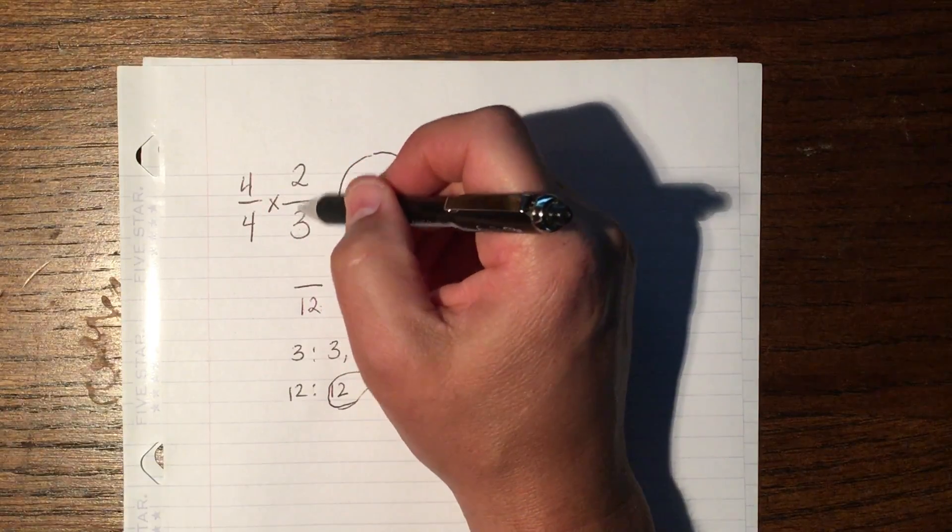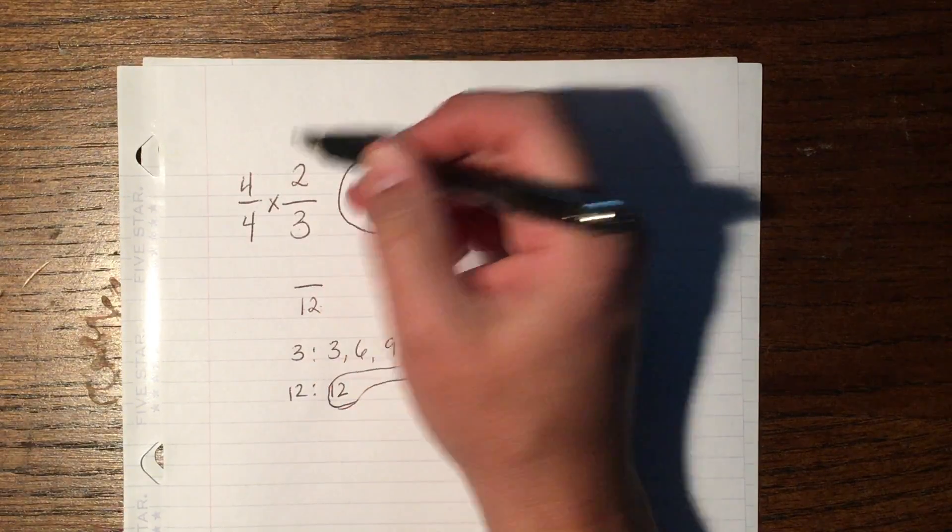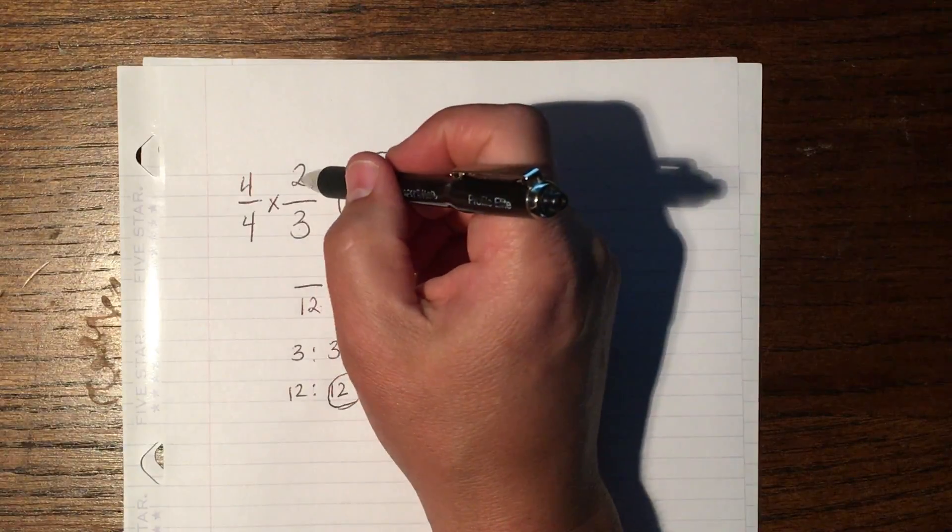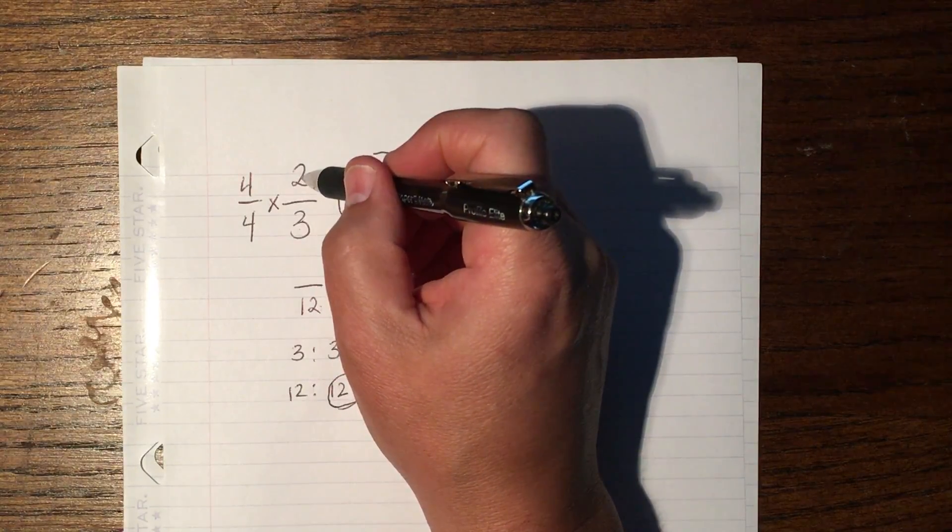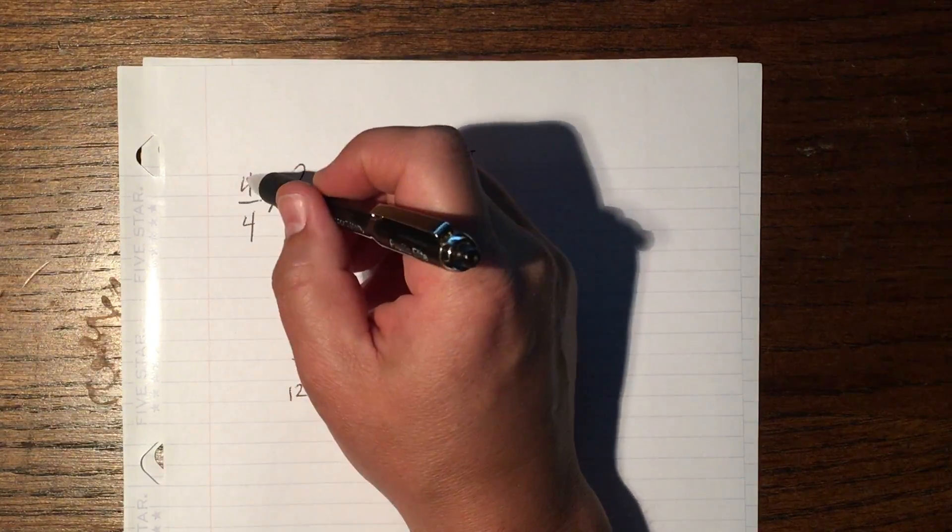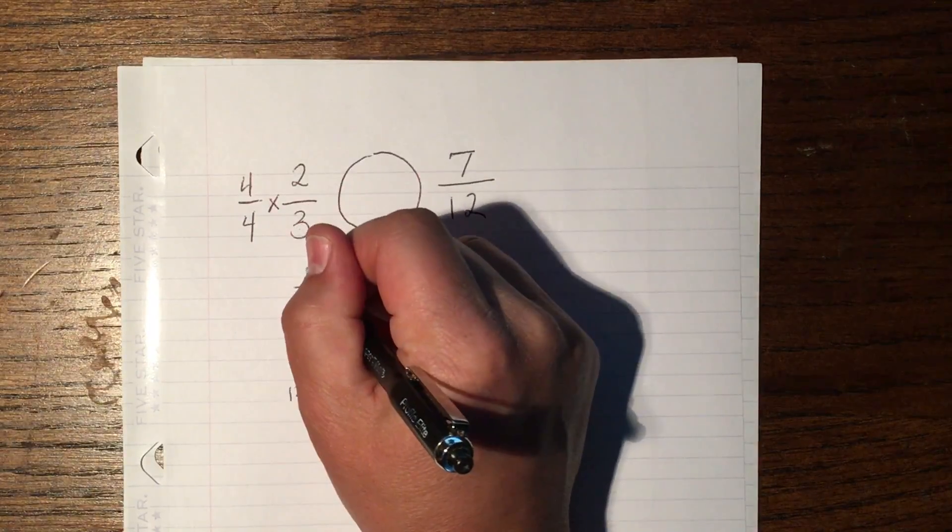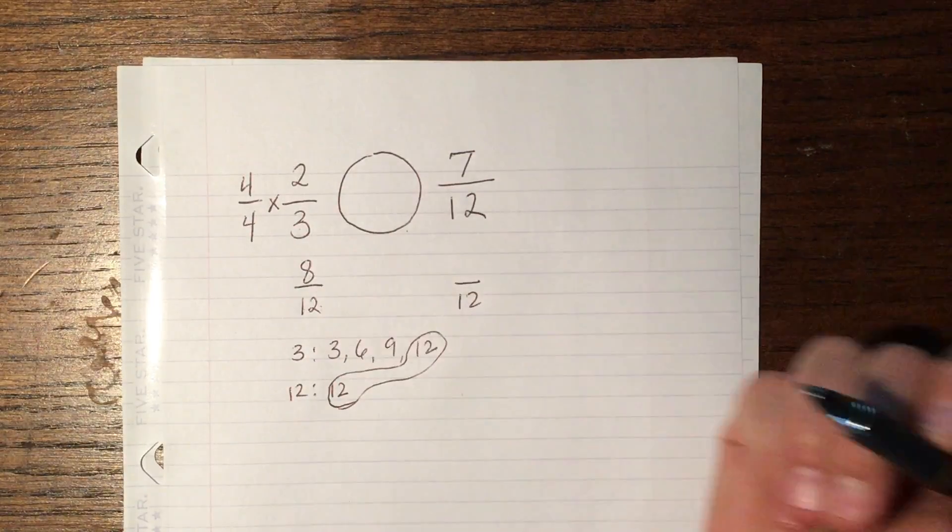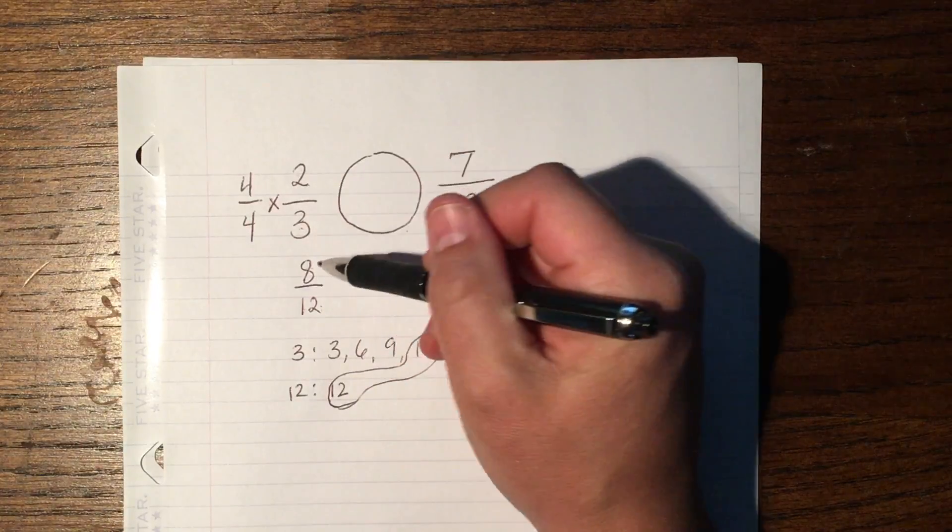Because, as you can see, this is like 2 thirds times 1, and anything times 1 is the same thing. So when I multiply 2 times 4, I get 8. That's going to be my new numerator. So 8 twelfths equals 2 thirds.